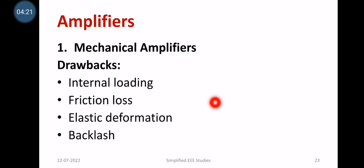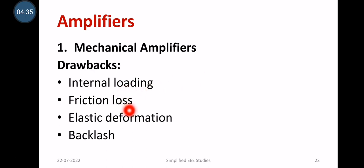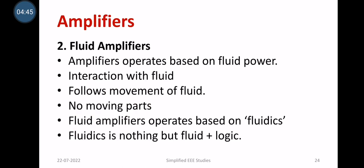What are the setbacks of mechanical amplifiers? The main problem is the internal loading issue, because the control system structure consumes a little bit of power. Friction loss is another issue. Elastic deformation is also a factor, and there is a certain amount of backlash present in the system. These are the various setbacks of mechanical amplifiers.